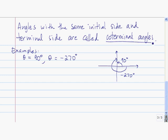Angles with the same initial side and terminal side are called coterminal angles. An example of two coterminal angles are 90 degrees and negative 270 degrees. 90 degrees starts at the positive x-axis and rotates to the positive y-axis — that is the initial side and terminal side of the 90 degree angle. The negative 270 degree angle starts here and then we rotate it clockwise to get to the same terminal side.